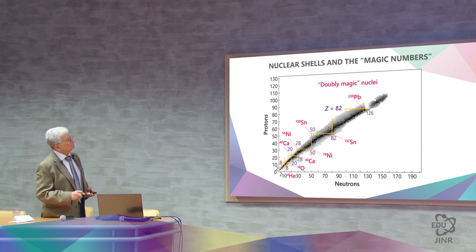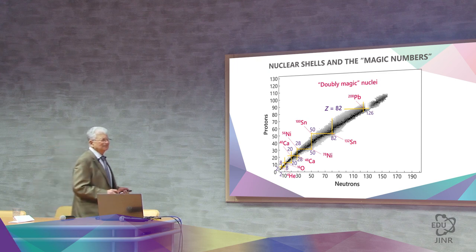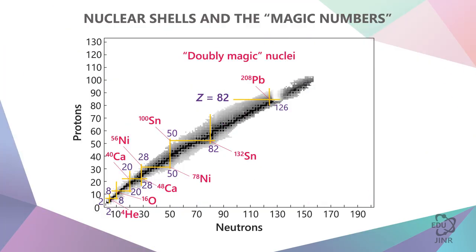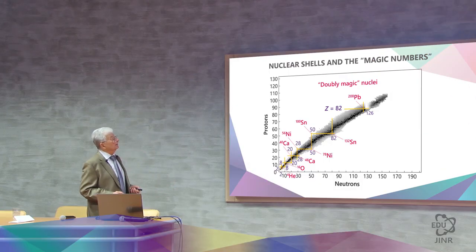Lead-208 is the last stable nucleus. There is a lot of lead because it is doubly magic. If it had not been doubly magic, it would have been radioactive, and it would not have been in the ground. But this is not what interests us right now, although we are interested in what is coming next.